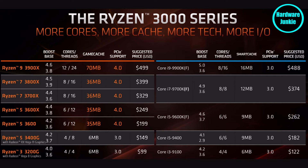AMD and Intel put these numbers in front of their parts to make sure most people can understand what's going on. Now let's get into a bit more detail. In the four-digit number that both Intel and AMD use, the first digit always indicates the generation the part is from.